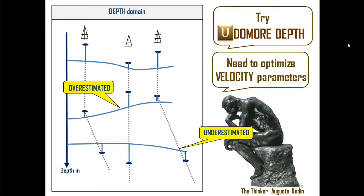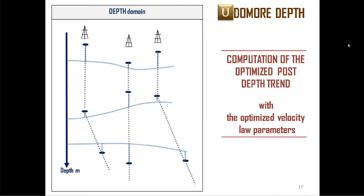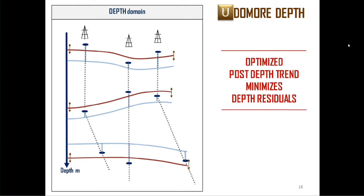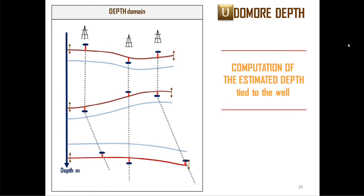We propose you to try UdomoDepth. Why? Because it could compute optimized post-depth strength with optimized velocity law parameters, which will be computed for all three layers at the same time in the interval of the confidence. It will also minimize residuals between well depth markers and the post-trend. What is more, at the same run, UdomoDepth will compute best estimated depth, which is tied to the well.